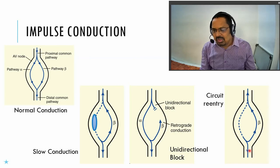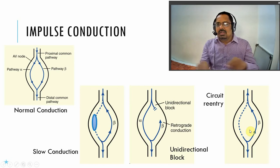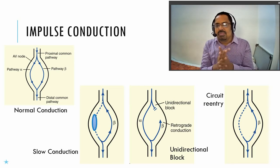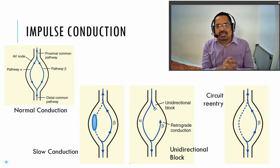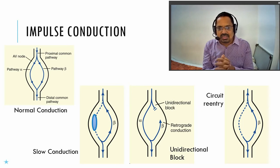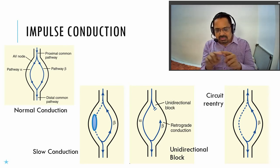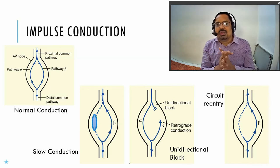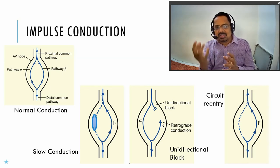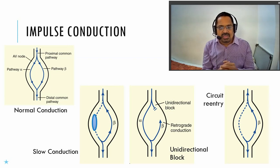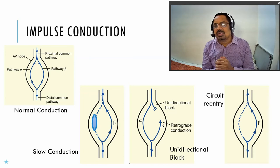The third mechanism is circuit re-entry. The block or damage occurs at a point where the signal divides into alpha and beta pathways and does not propagate further in one direction. The signal from the alpha pathway goes into the beta pathway, and the signal from the beta pathway goes into the alpha pathway, creating a circulation loop. The impulse goes round and round — re-entry takes place — causing unnecessary twitching. The signal travels in one circular loop, which is the circuit re-entry.